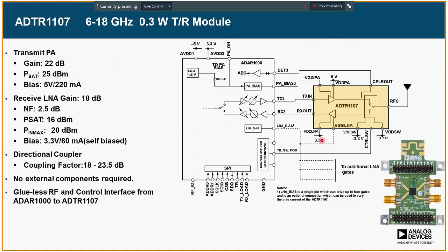The other part of the RF equation is the TR module or amplification. Connected to the receive side of the beamformer is an LNA, and on the transmit side is a PA. This PA and LNA are housed in a module along with a TR switch. The ADTR1107 is a quarter-watt TR module designed specifically to couple closely with the ADAR1000 beamformer. In addition to a glueless RF interface, there are many other interconnects: a TR switch control signal, a signal feeding back from a directional coupler to an RF detector on the beamformer, and bias control lines for turning the PA and LNA on and off and adjusting their bias.